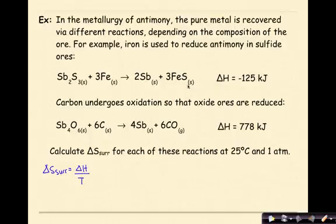So in our first situation, from our first reaction, we're going to have negative 125 kilojoules over the change in heat. We need this to be in Kelvin, so we're converting 25 degrees Celsius into Kelvin, which we know is 298K.